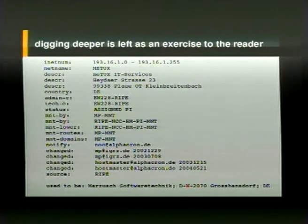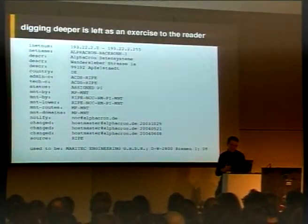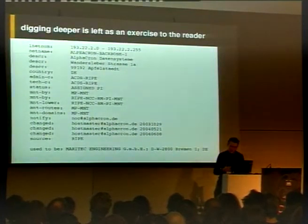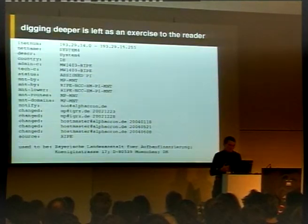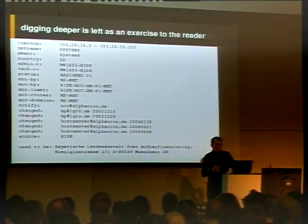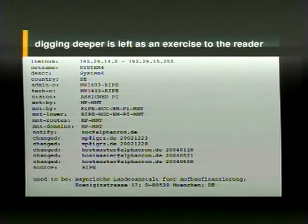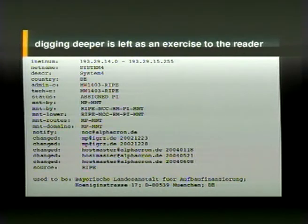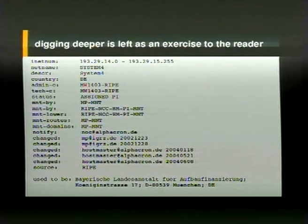This was a particularly interesting set — they have their backbone network, which used to be an engineering GmbH that no longer exists. It's an old German postal code. The Bayerische Landlandsanstalt für Aufbaufinanzierung is now System 4. What is IGR-Z.de? That's one of the domains they use. In the past, when checks were not that easy to circumvent, for some objects it was enough that you had the right email address. So if you find an object in the database which points to an email address that points to a domain which no longer exists, you can register the domain and let them send you the credentials.